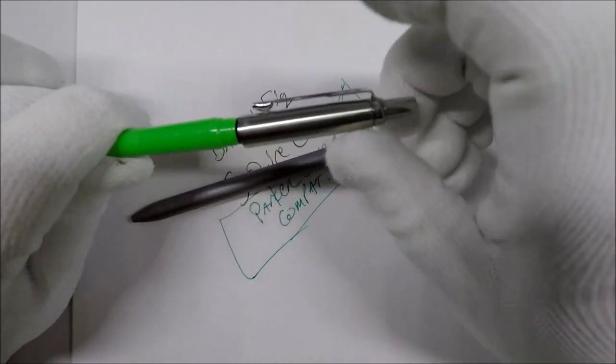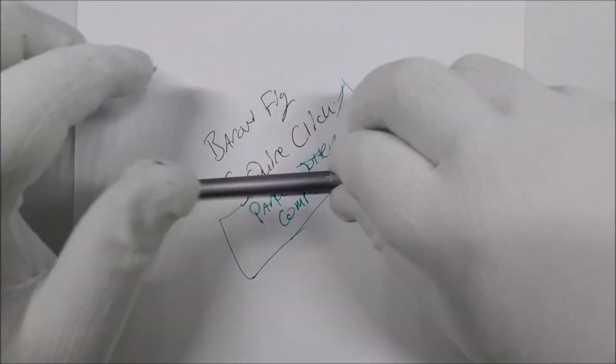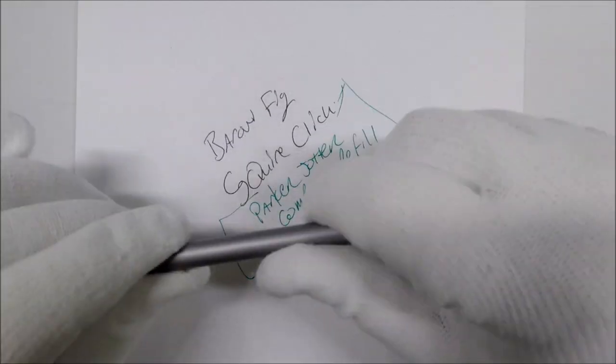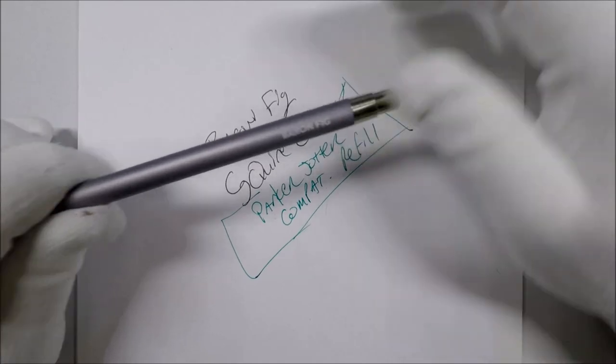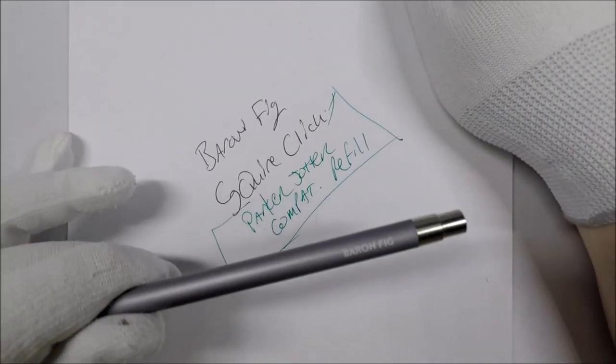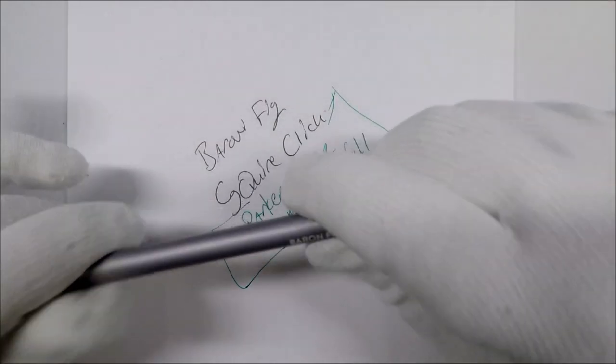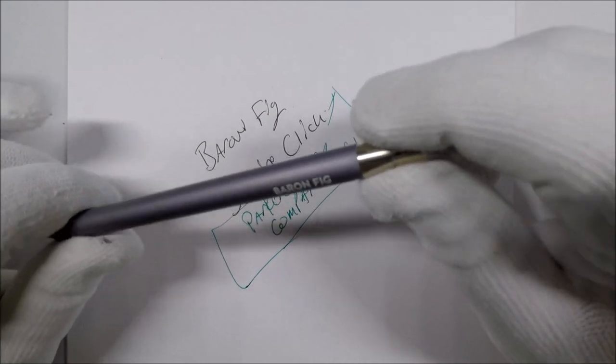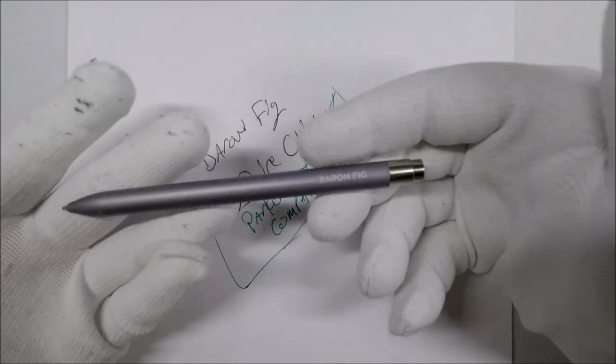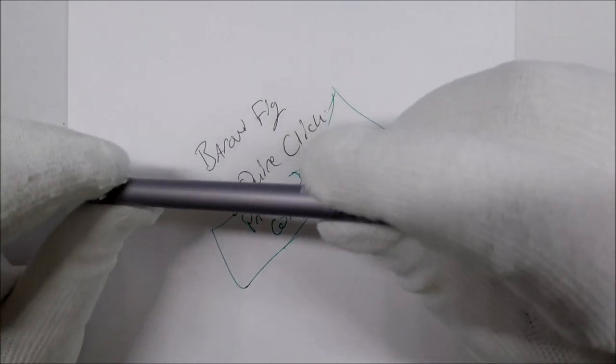And since it takes Parker Jotter compatible refills, if you are so inclined and you wanted to, you can use a Fisher Space Pen refill in it. The Fisher Space Pen refills come with a little adapter. You basically put it on top and it makes them Parker Jotter compatible. So if you wanted to, you could have this as your Write Anywhere pen.